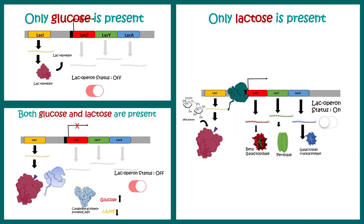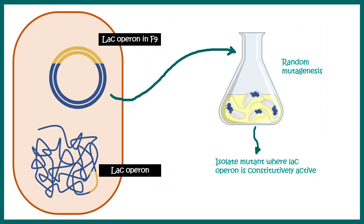Only when lactose is present but glucose is totally absent does the bacteria need to metabolize lactose. In that case, it needs the lactose-metabolizing enzymes produced by the lac operon, and the lac operon is turned on.